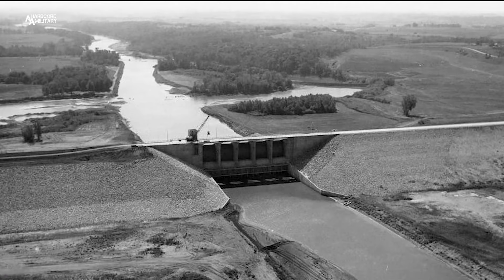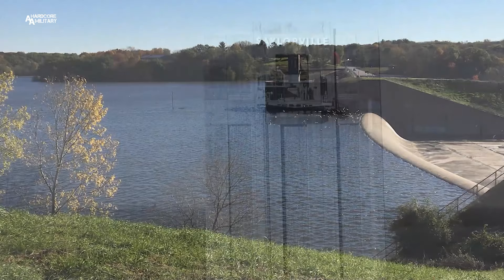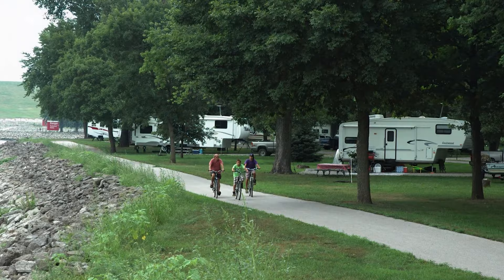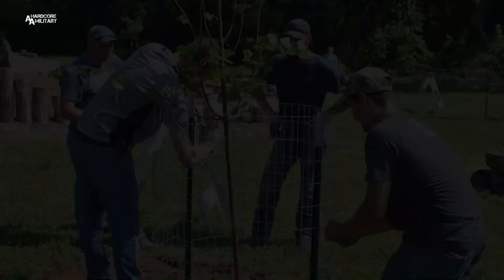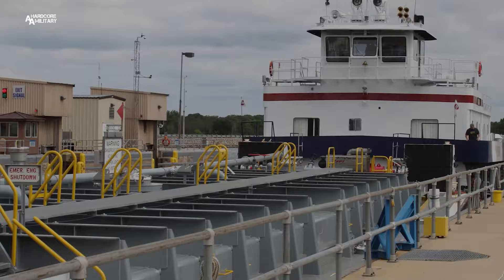One reservoir was at Coralville Lake in Iowa City in 1958. Another at Lake Red Rock in Pella, Iowa in 1969. And finally, Saylorville Lake in Johnston, Iowa in 1977. All three lake projects are multiple-purpose projects providing primary benefits in flood control and low flow augmentation, with secondary benefits in recreation, natural resource management, and environmental stewardship. Since being built, the three lakes combined have prevented cumulative flooding damages of over 2.5 billion dollars in the downstream areas.